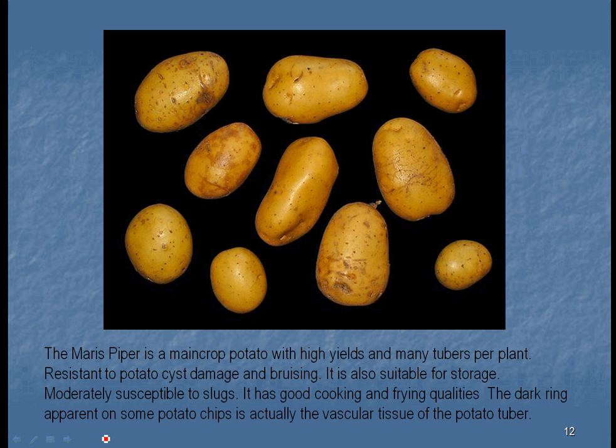If you've ever looked at a potato chip, you'll notice there's a ring around it. That's actually the vascular tissue — the xylem and phloem — that little dark line that you see there, as discussed in Unit 2.